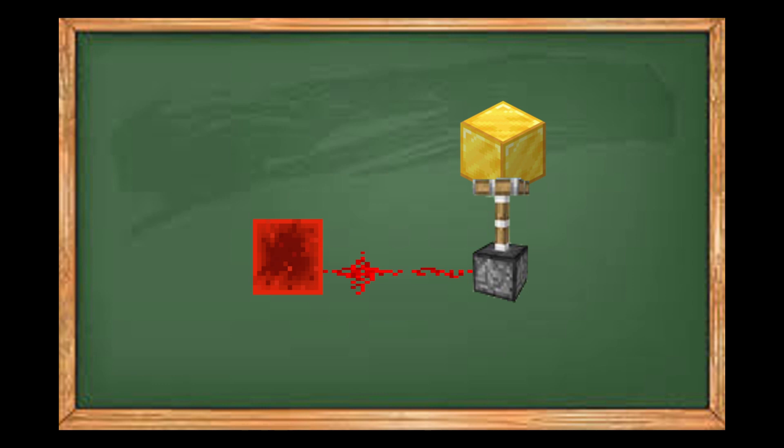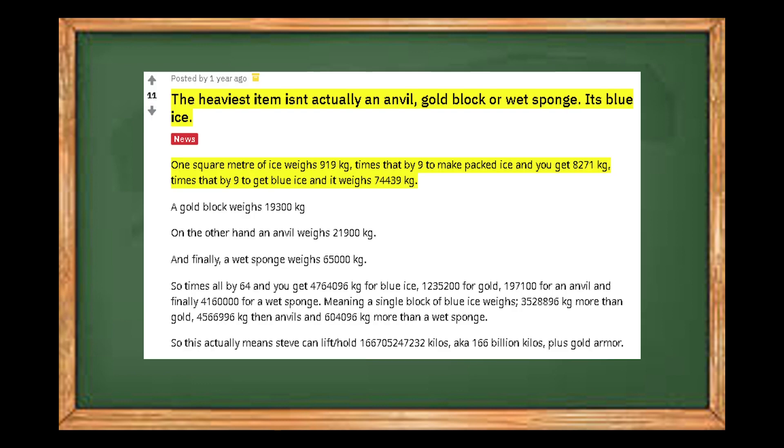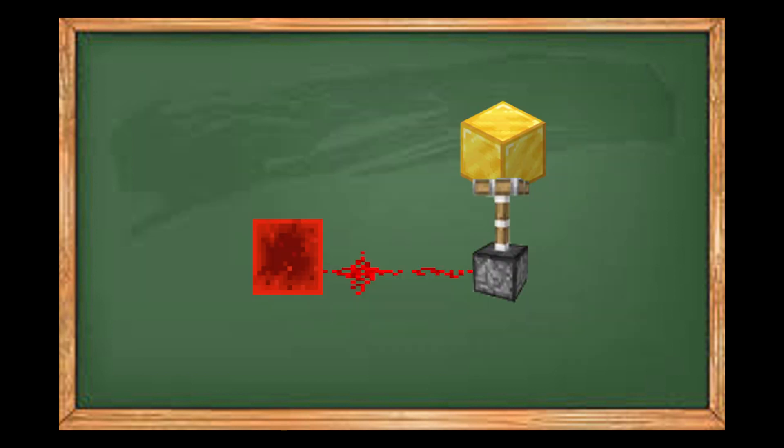In fact, it's said that blue ice is actually the heaviest object, according to this post on reddit, but I'll keep it simple and use gold for this example. Another idea I was considering was that blocks like gold and diamond are weightless, because they can float, whereas blocks like anvils and gravel actually have a weight to consider.